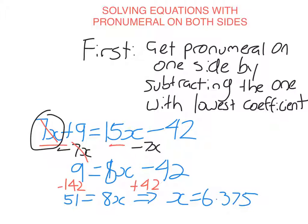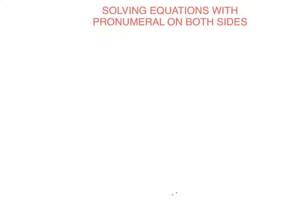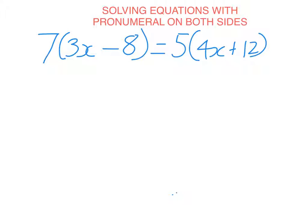Let's look at another example. So this one I'm going to do with brackets, which we also looked at in previous lessons. So let's have 7 times 3x minus 8 equals 5 times 4x plus 12. Now when you have x on both sides of the equation, in this case we do that, but we have brackets involved in the equation, we have no choice but to expand the brackets first just like we did in previous lessons.